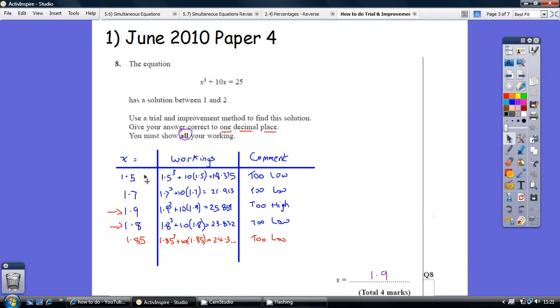So split the difference again. Go somewhere halfway between 1.5 and 2, so let's say 1.7. Substitute that in, we get 21.9. That's still lower than 25, so the comment should be it's still too low.